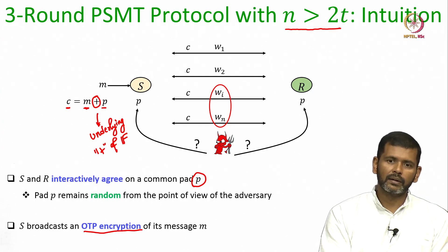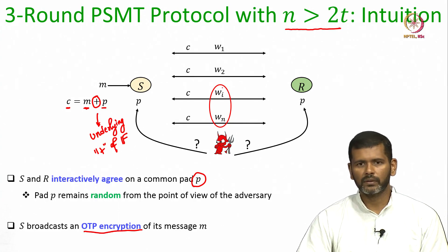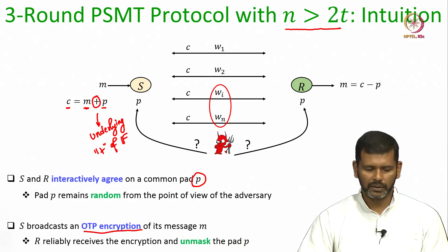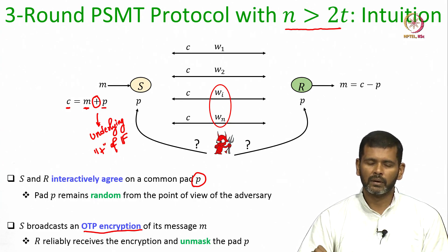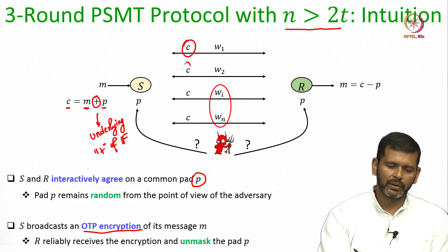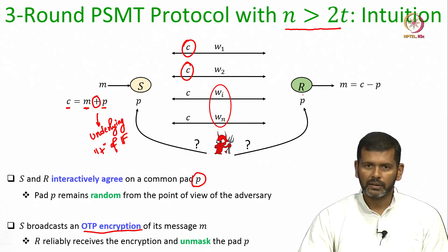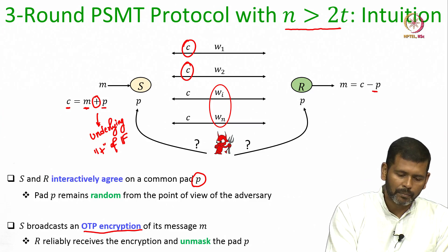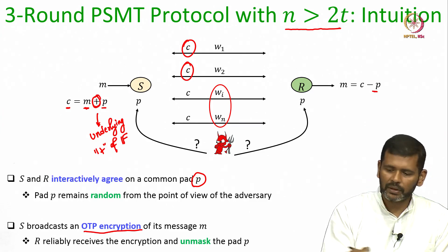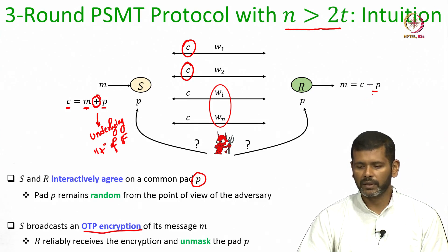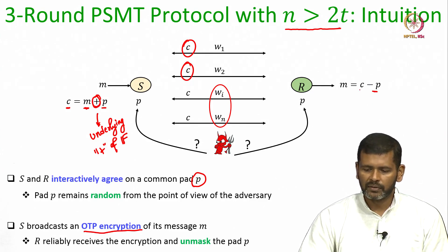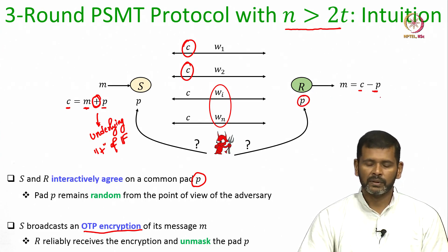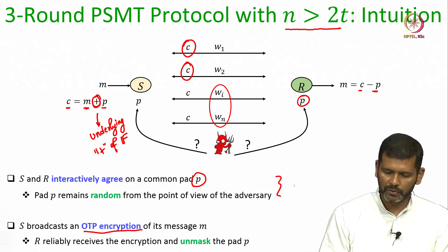Even if the adversary changes t copies of this one-time pad encryption, the majority of the wires will be honest and will deliver the actual OTP encryption. So once the receiver recovers C by taking the majority, it can unmask the same pad P — adding the pad P is the masking operation and subtracting it is the unmasking operation. Once the receiver receives the encryption C, it can unmask the pad P, which is also available to the receiver because of the pad exchange protocol.